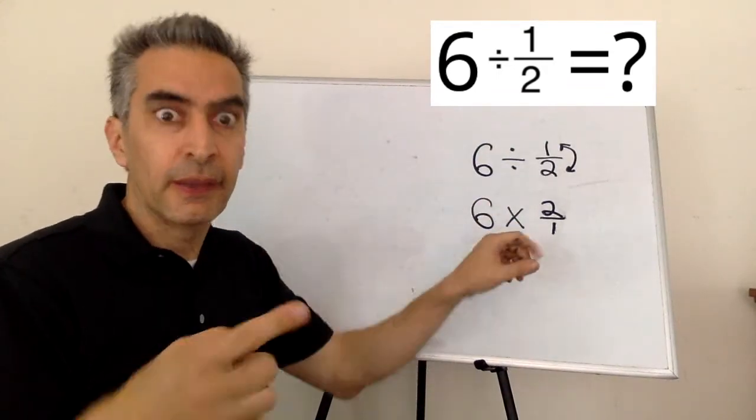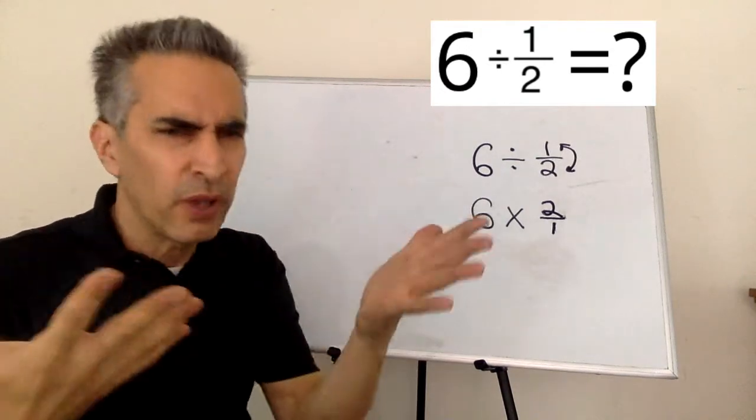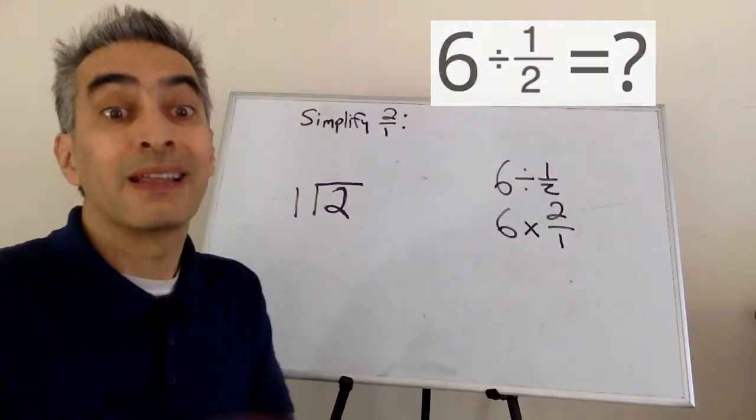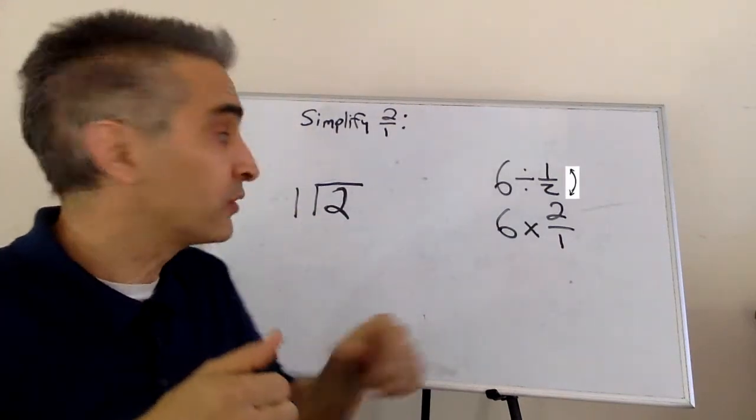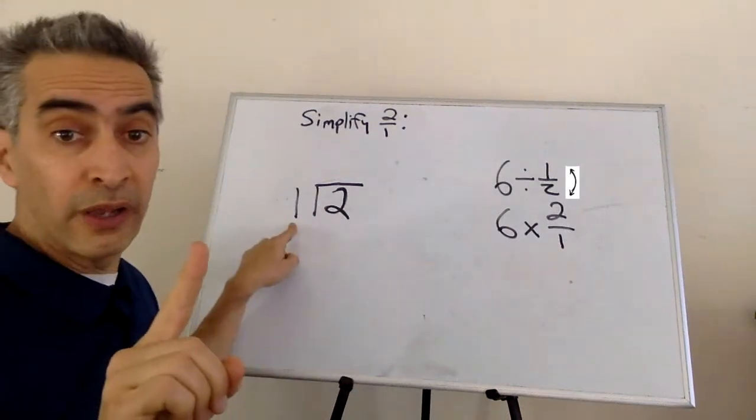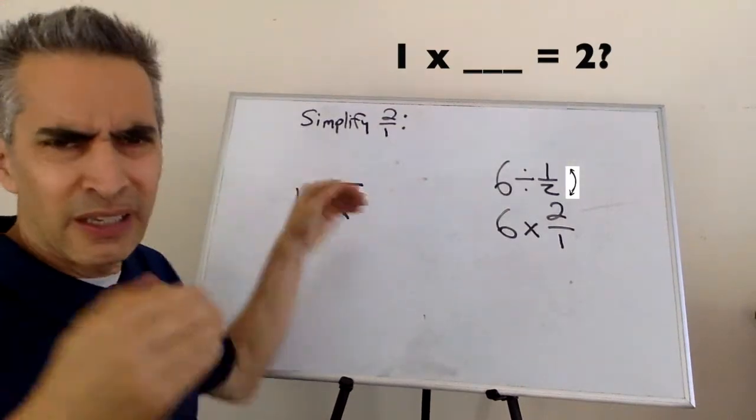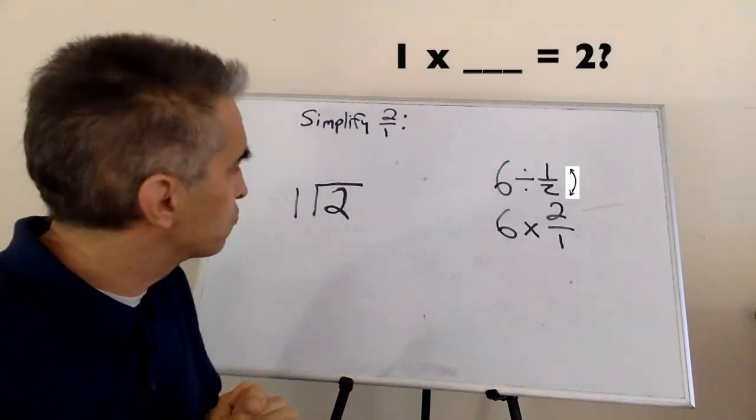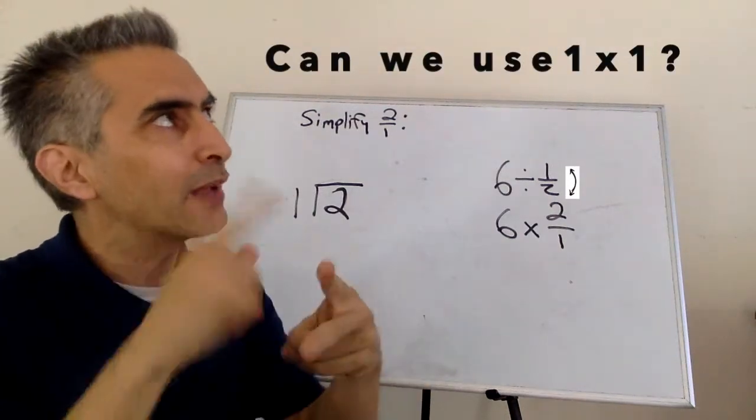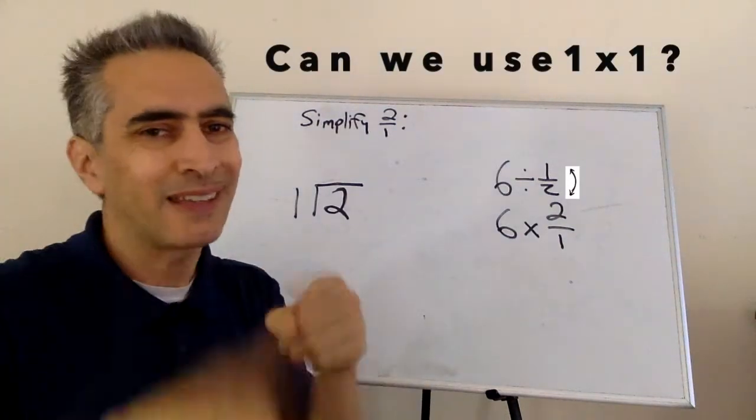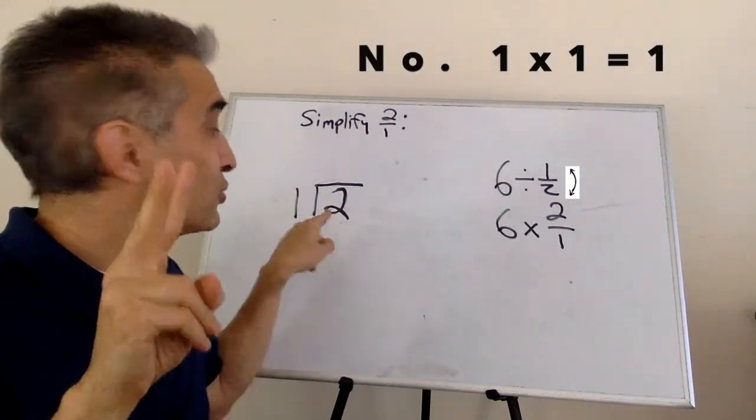This two over one, we can reduce. Two over one means two divided by one. Now we're going to reduce two over one by dividing two divided by one. One times what number that we're going to put right here equals two? One times one? One times one equals one. We can't use that because one is smaller than two.